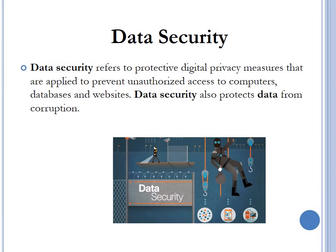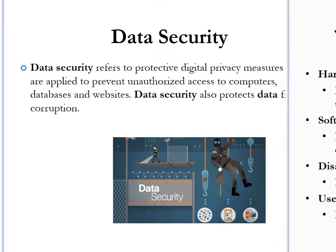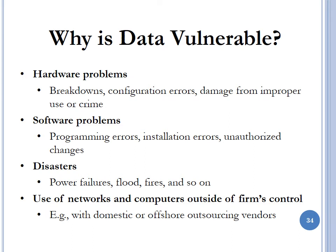An important part of data governance is data security. Data security refers to protective digital privacy measures applied to prevent unauthorized access to computers, databases, and websites, and also protects data from corruption. Data is vulnerable due to hardware problems — computers will break down, you may have configuration errors, damage from improper use of hardware, and crimes. Data is also vulnerable because of software problems, resulting from programming errors, installation errors, or unauthorized changes in software.